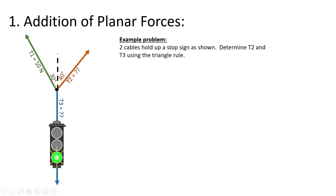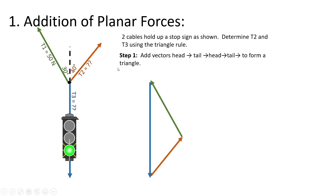We're purely adding forces together — not worried about moments or torques yet. Three vectors is kind of what you can solve for these two-dimensional problems, looking at forces in the X and Y direction adding to zero. That means we have two equations and two unknowns. It's very common to have three vectors where two are unknown. One way to solve this is to move these vectors around and add them head to tail, then use the law of sines or cosines to walk around the sides of the triangle.